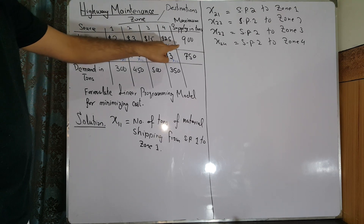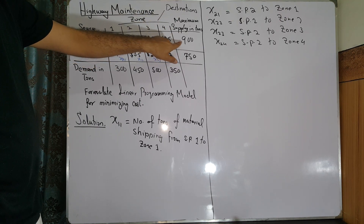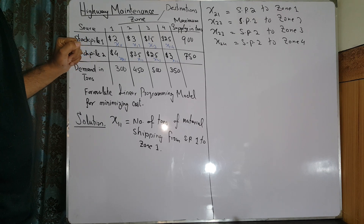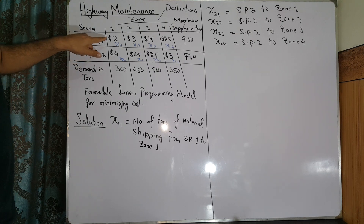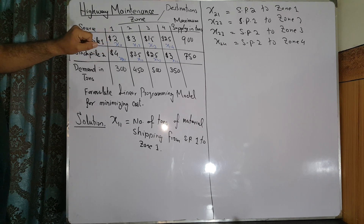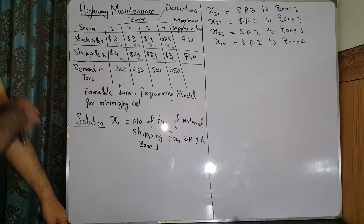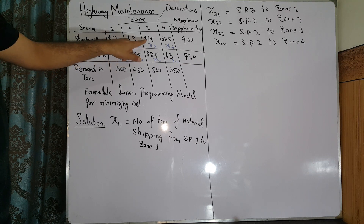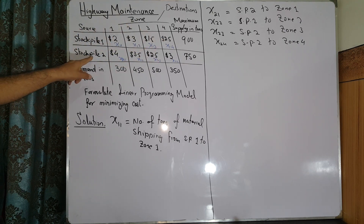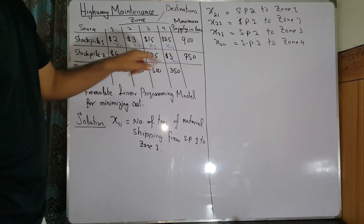The maximum capacity of stockpile 1 is 900, and the maximum capacity of stockpile 2 is 750. In stockpile 1, the cost to zone 1 is $2, zone 2 is $3, zone 3 is $1.5, and zone 4 is $2.5. In stockpile 2, zone 1 is $4, zone 2 is $3.5, zone 3 is $2.5, and zone 4 is $3.